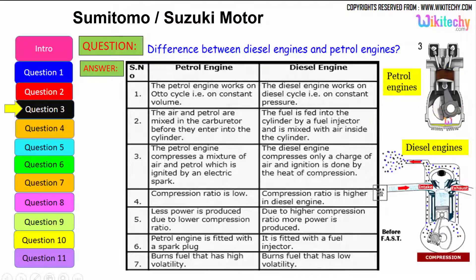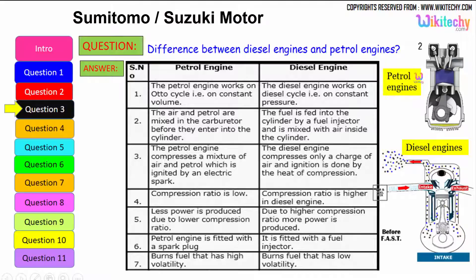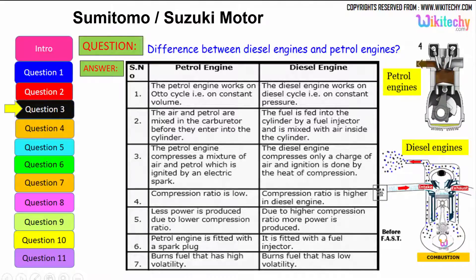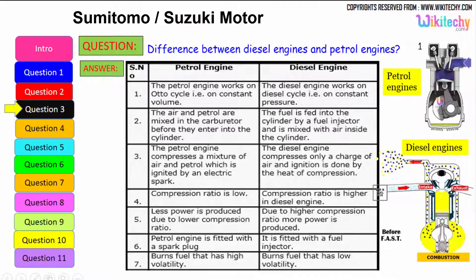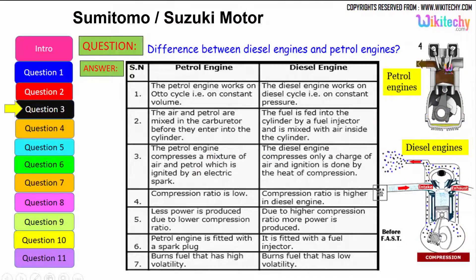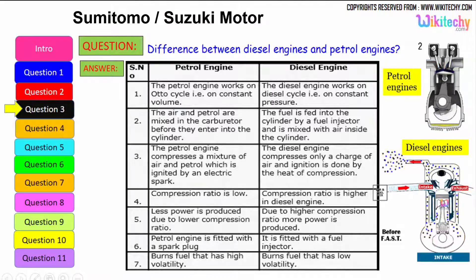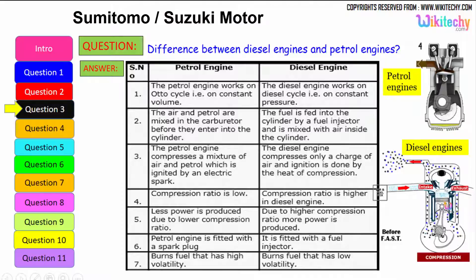In a petrol engine, air and petrol are mixed in the carburetor before they enter the cylinder. In a diesel engine, fuel is fed into the cylinder by a fuel injector and is mixed with air inside the cylinder. The petrol engine compresses a mixture of air and petrol which is ignited by an electrical spark, whereas the diesel engine compresses only a charge of air and ignition is done by the heat of compression.